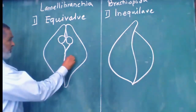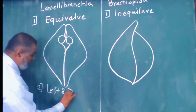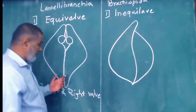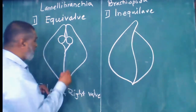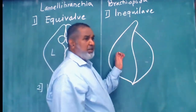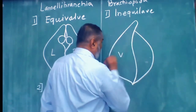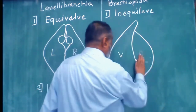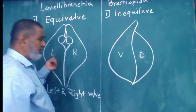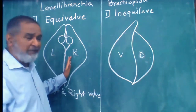Second point: in the lamellibranch, the valves are called the left valve and right valve. Whichever valve is on your left hand side is the left valve, and whichever is on your right hand side is the right valve. Both are equal in size, so it is equivalve. These two equal valves are present in the lamellibranch.